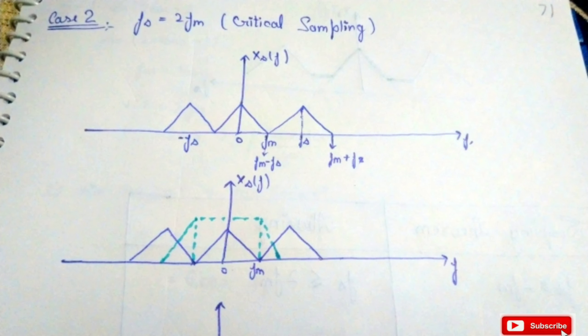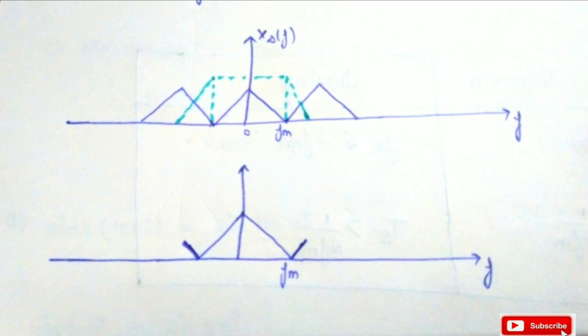In critical sampling, fs equals 2fm. The distance between fm and (fm − fs) becomes zero, meaning fm equals (fs − fm), so all the triangles start right after each other with no guard band. When this signal is passed through an ideal low-pass filter, we can recover the message signal without distortion. However, since an ideal low-pass filter is not practically realizable, we generally do not use critical sampling (fs = 2fm) in practice.